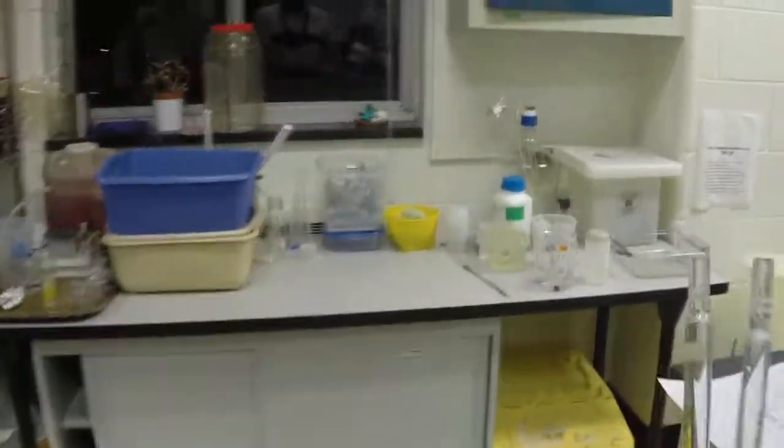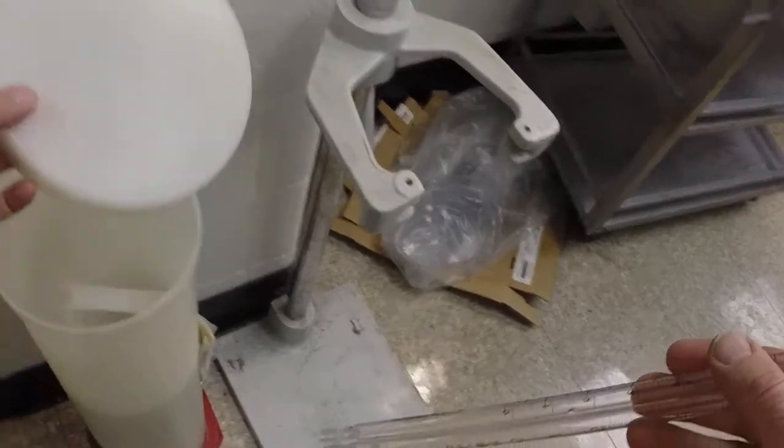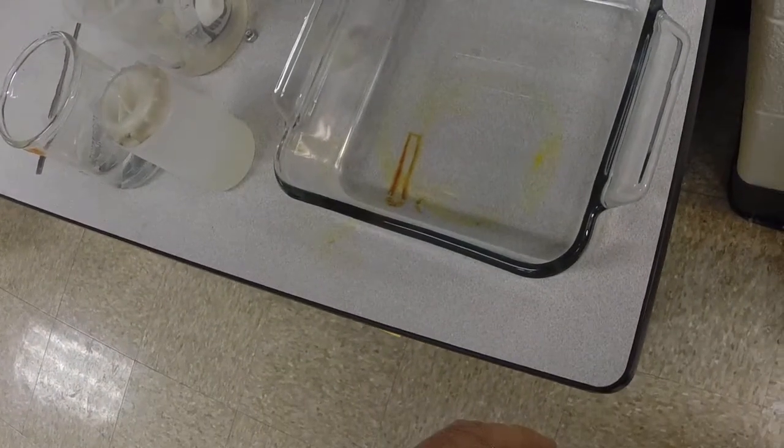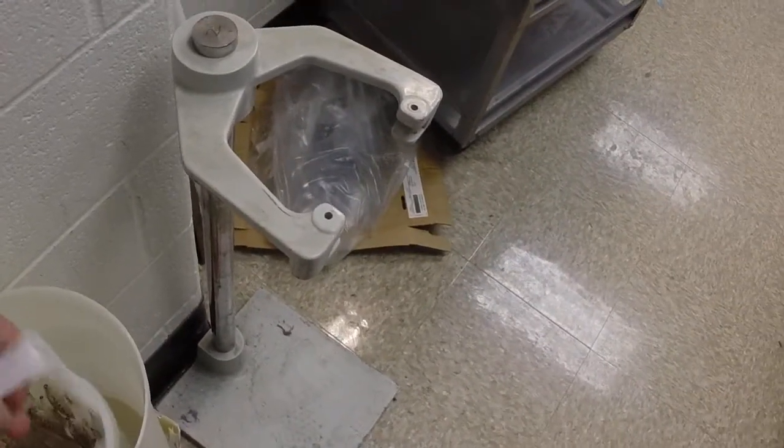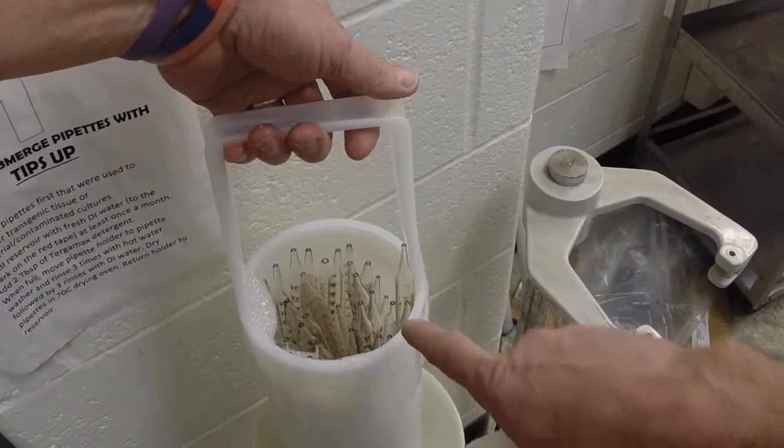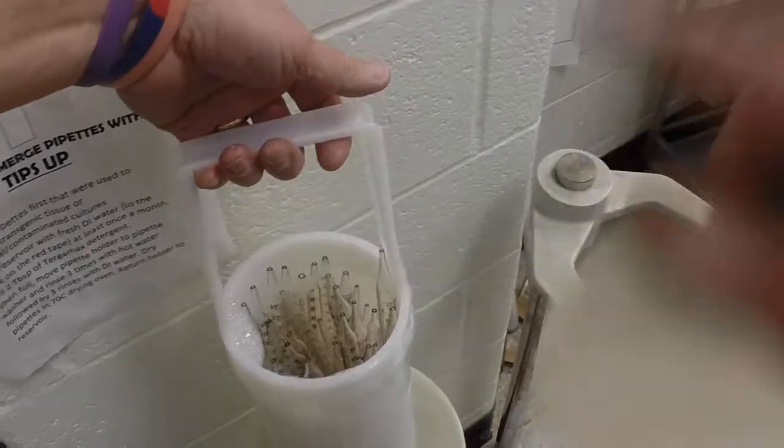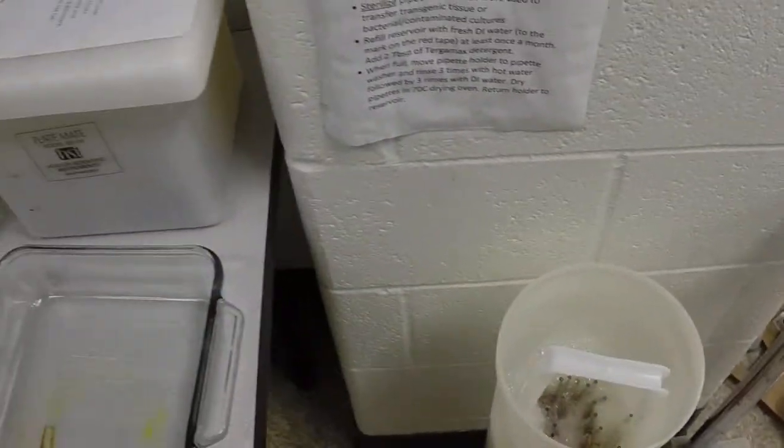So the process of washing the pipettes is they need to be placed inside the pipette washer upside down. If you look in here they should be going like that, and looking down inside all the tips are up. That's because the tips are small and if they're upside down they'll actually seal themselves and the water will not run up and down inside.